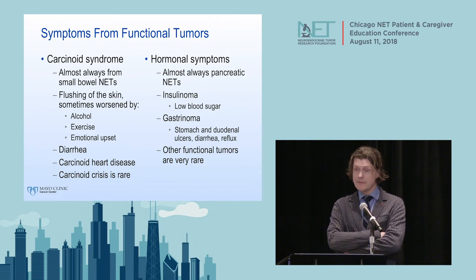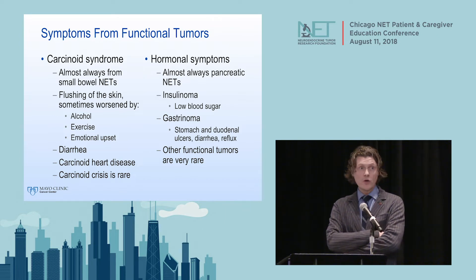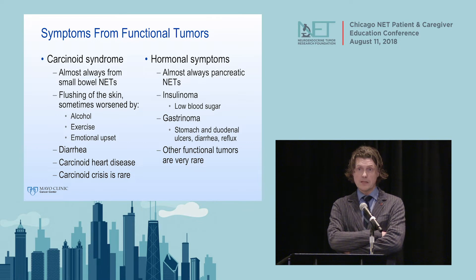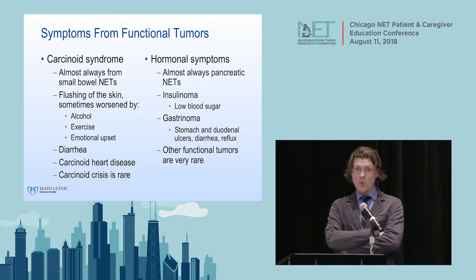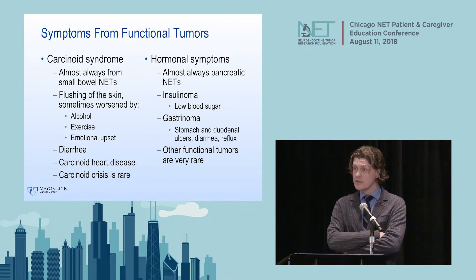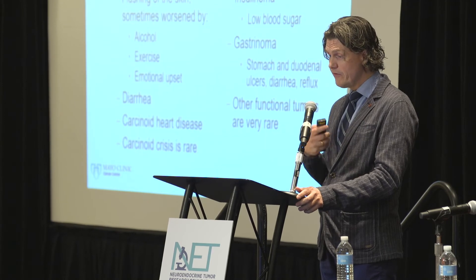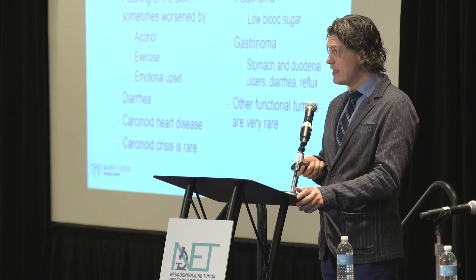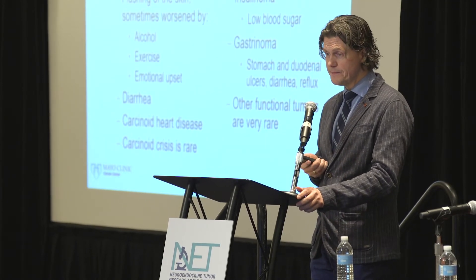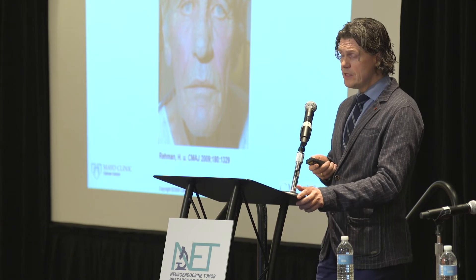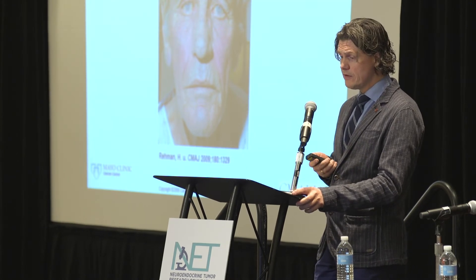Hormonal symptoms are mostly from pancreatic neuroendocrine tumors, though not always. An insulinoma is a tumor that makes insulin and can drop your blood sugar, making you dizzy and disoriented. A gastrinoma makes a hormone called gastrin that increases stomach acids, which can burn a hole in the stomach, cause perforations, severe diarrhea, and reflux. The other functional pancreatic tumor types are much less common.